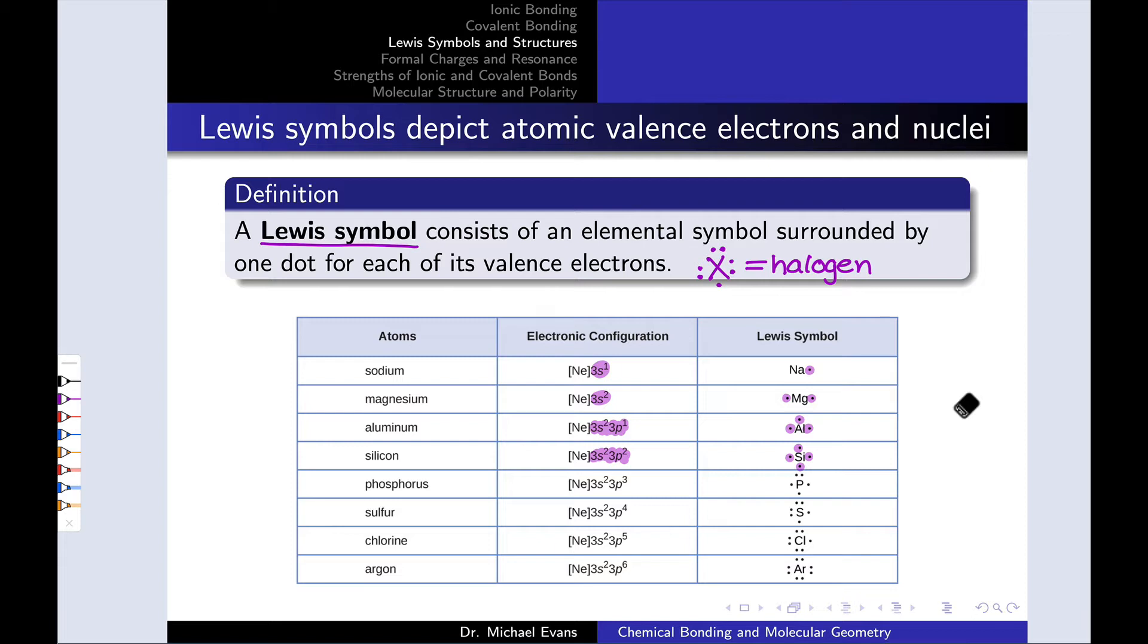So the number of dots around the element symbol reflects the number of electrons in the valence shell. These are the electrons that are actually involved in covalent bonding.